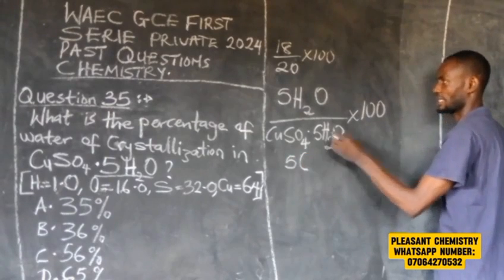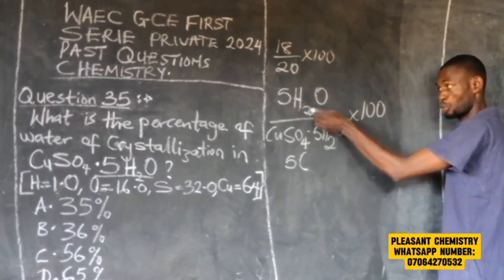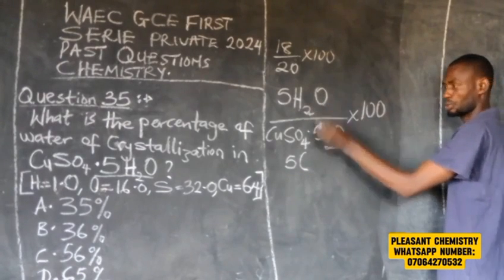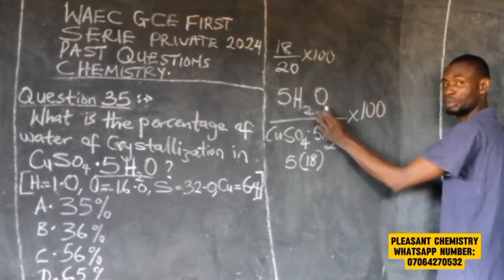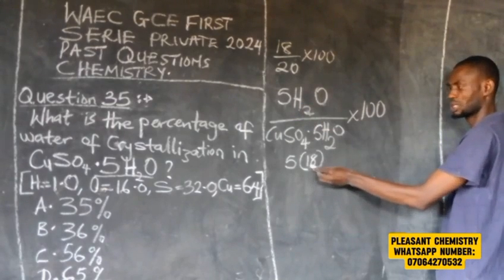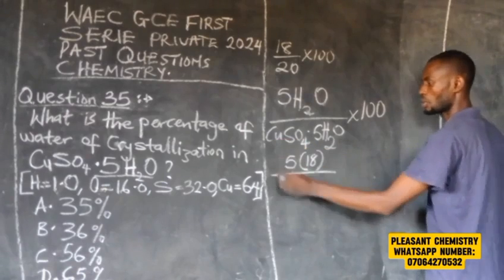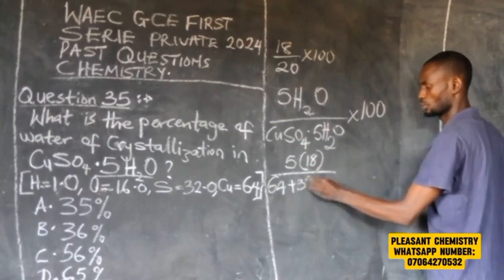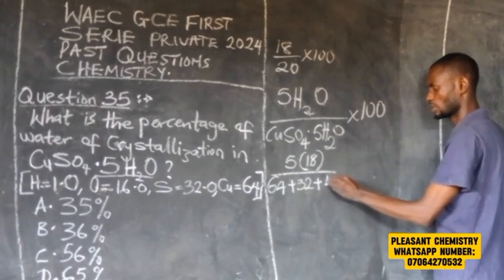The molar mass of water: hydrogen is 1 × 2 = 2, plus oxygen = 16, giving 18 g/mol. The 5 means we multiply the molar mass of water by 5. So 5 × 18 = 90. The denominator: copper = 64, sulfur = 32, oxygen = 16 × 4 = 64.